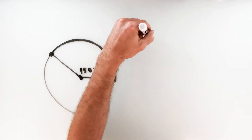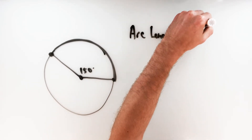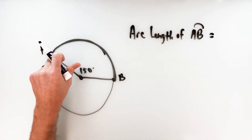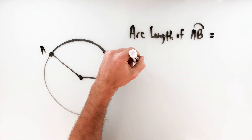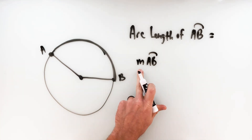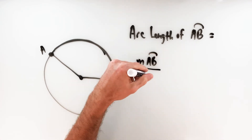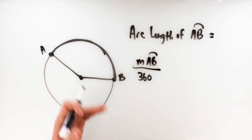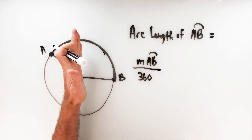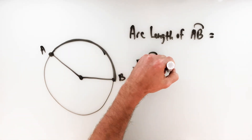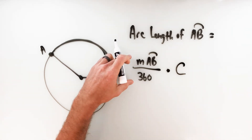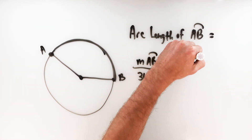To find the arc length of arc AB, take the measure of arc AB and put it over 360 — that gives you the fraction of the circle you're dealing with. For example, 115 over 360, or 90 over 360 which reduces to one-fourth. Then multiply that fraction by the circumference, written as pi times diameter. Arc length equals the measure of the arc over 360, times the circumference.